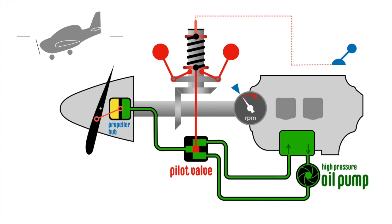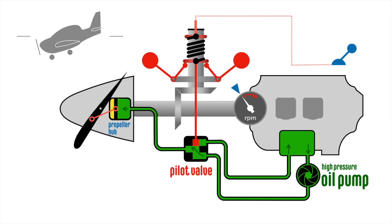The flyweights move outwards, open up the pilot valve and allow oil to flow into the propeller hub. The blade angle increases so that the propeller takes a bigger bite of the air. This requires more engine torque, so the RPM slows down and the flyweights move back to their equilibrium position. The pilot valve closes and the blade angle and engine RPM is maintained.